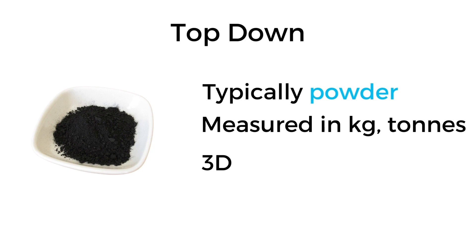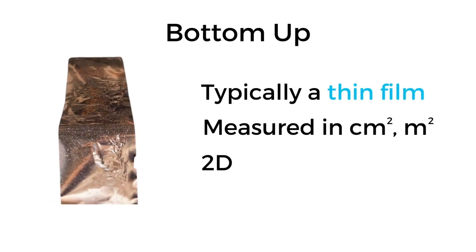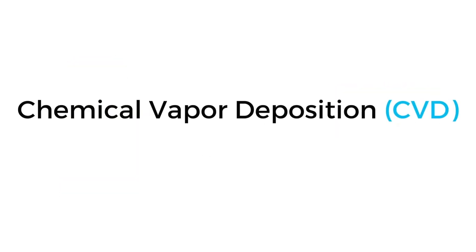On the flip side though, bottom-up processes do not typically use graphite, and the material generated is usually in the form of a thin film which is two-dimensional and can be measured in square centimeters or square meters. The process we use is chemical vapor deposition, or CVD, and it is a bottom-up process that yields graphene as a thin film deposition on a variety of compatible substrates.